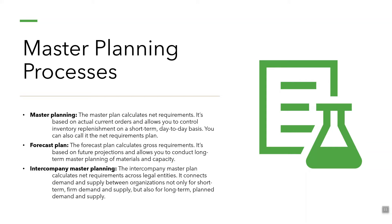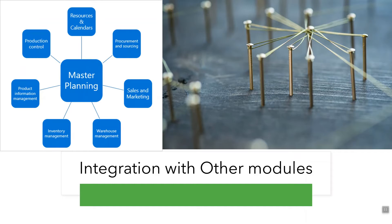Intercompany master planning calculates net requirements across legal entities. It connects demands and supply between organizations not only for short-term firm demand and supply but also for long-term planned demand and supply. Master planning has dependencies on multiple factors: resources and their working calendars, procurement and sourcing module, sales and marketing module, warehouse management, inventory management, and the configuration set up in product information management and production control.